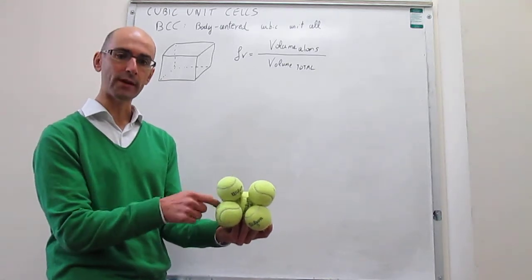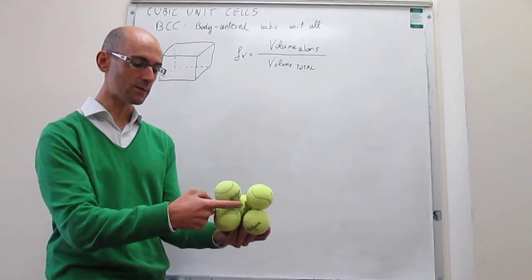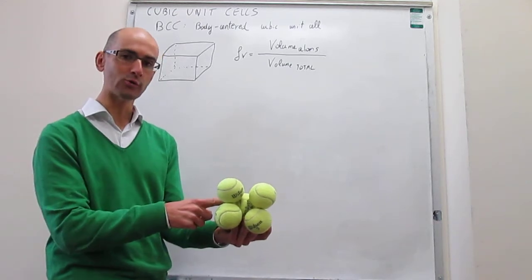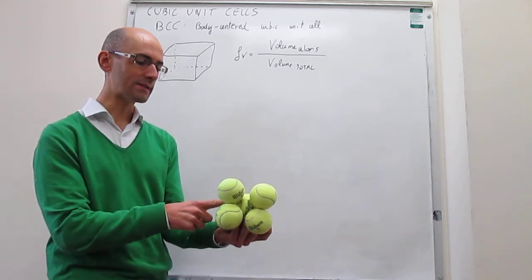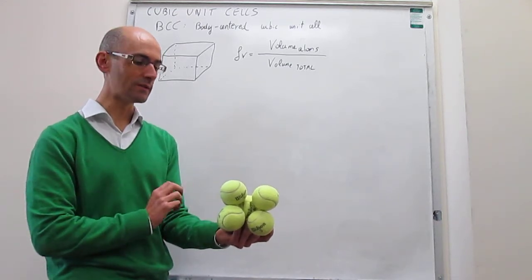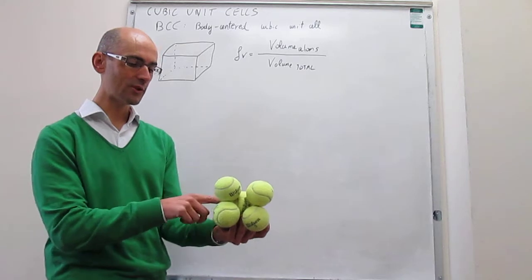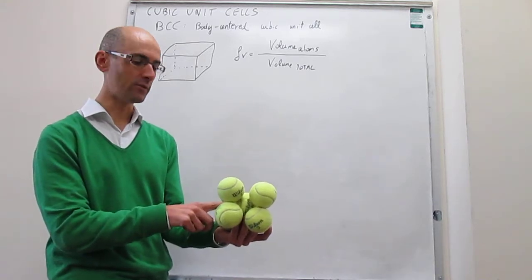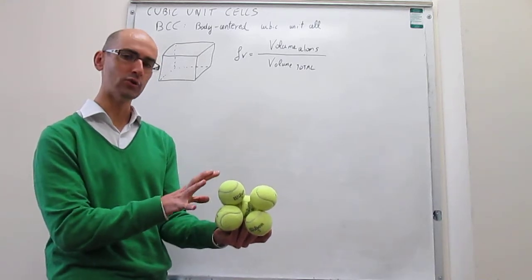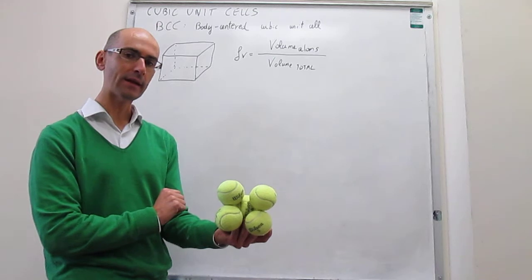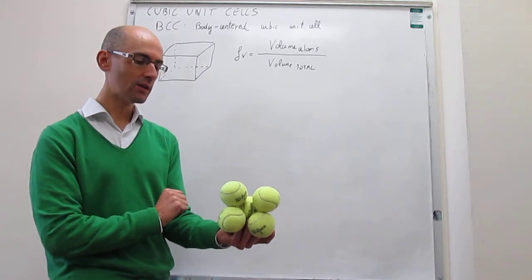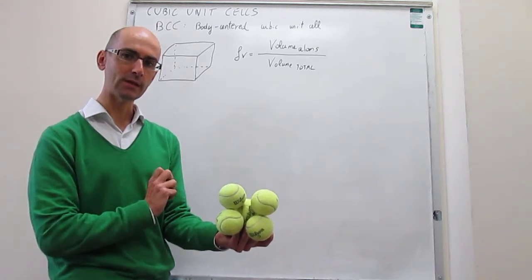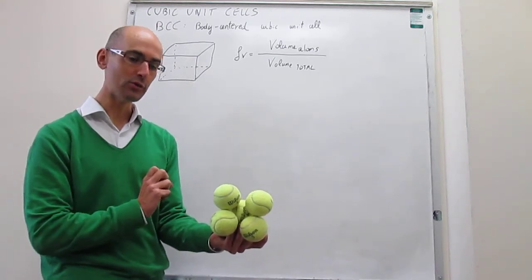Then you have the atom right at the center, which belongs entirely to the unit cell — it's not shared with any neighboring unit cells — so that adds another atom. In total, a body-centered cubic unit cell has two atoms per unit cell.